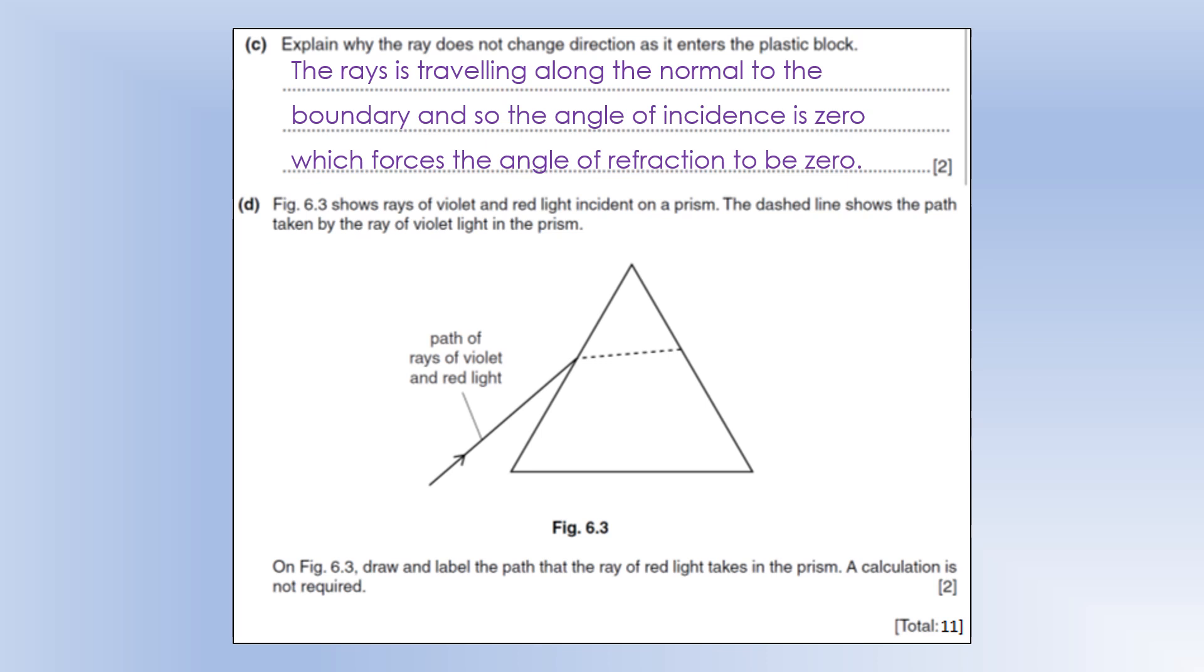So the diagram shows rays of violet and red light incident on a prism. So the dashed line shows the path taken by violet. Draw red light - the path red light would take. So I'm going to draw in a normal to start with, because red light travels at a higher speed, so it has a smaller refractive index than violet, which means it has a bigger angle of refraction, which you can see shown to the normal. Another way of describing it is we often say that red light is refracted less than violet light is. This is another way of saying the same thing.